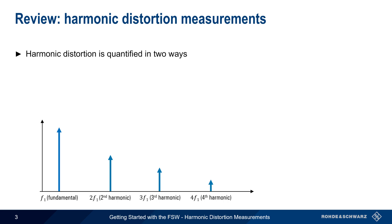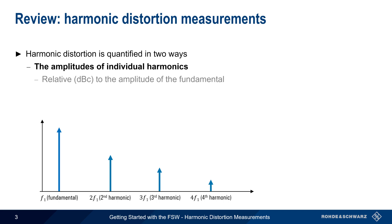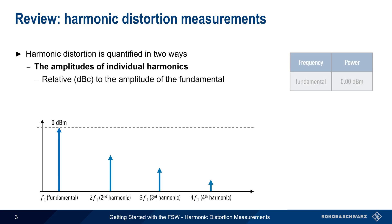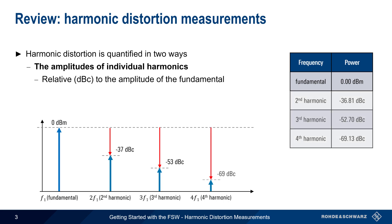As you should already know, harmonic distortion can be quantified in two ways. The first is the amplitude of the individual harmonics. These are normally reported as powers relative to the fundamental, so units are typically dBc, or decibels down from the fundamental carrier. In this example, the amplitude of the fundamental is measured as an absolute power in dBm, but the power of each harmonic is reported in dBc relative to this power.